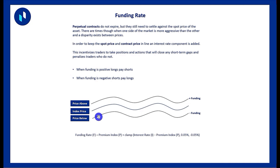When shorts close and longs open, that adds buying pressure which brings price back up in line with the index. This is the core interest rate mechanism: one side of the market pays, the other receives, and it serves as an incentive to keep the spot price and futures price constantly in line with each other. Because perpetual swaps never expire, they constantly need to settle against one another — and the funding rate is what keeps these two markets aligned.